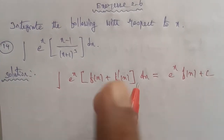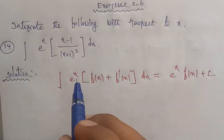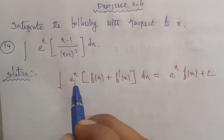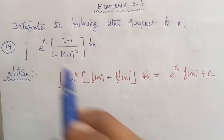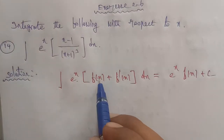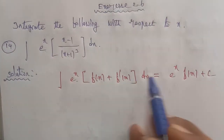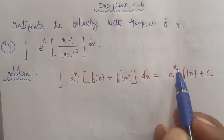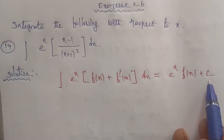So this sum is in the format to use that formula. The integral of e power of x — we need to identify f of x and differentiate it to match the format, giving us e power of x and f of x.